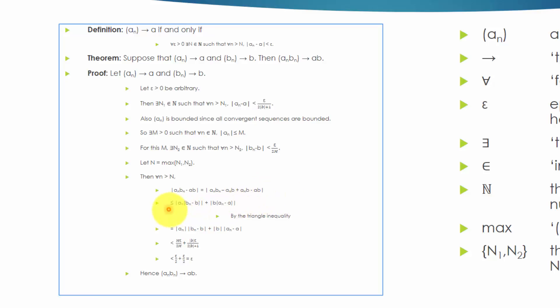which is less than or equal to the absolute value of A-N times B-N minus B, plus the absolute value of B times A-N minus A, which is less than the absolute value of A-N times the absolute value of B-N minus B,